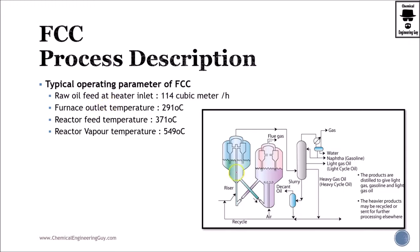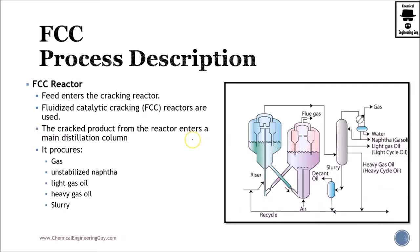Typical operation conditions of the FCC or the reactor will be the follow. For these conditions, we will have the following temperatures: 291 Celsius furnace outlet temperature, the reactor feed will be 371 and the vapors or products of the reactor will be up to 549.